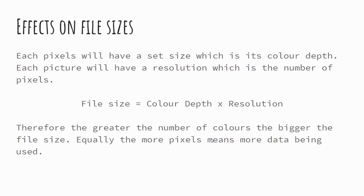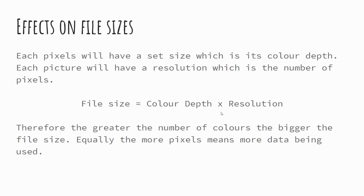In terms of calculating file sizes, the simple maths is: colour depth multiplied by the resolution — that is, the height multiplied by the width. So for example, 100 pixels by 100 pixels gives 10,000 pixels in total, multiplied by the number of bits per pixel. If it was one bit that would be 1 times 10,000; if it was 24 bit, 24 times 10,000. Remember that gives you the answer in bits — divide by 8 to get bytes, and if appropriate divide by 1000 or 1024 to get kilobytes, thinking back to our previous lessons.